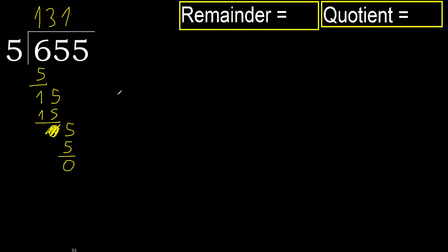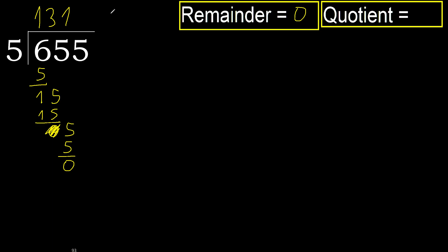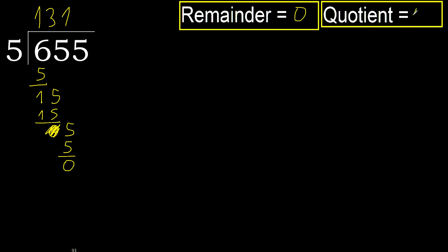There is no next number, therefore finish it. 655 divided by 5 is here.